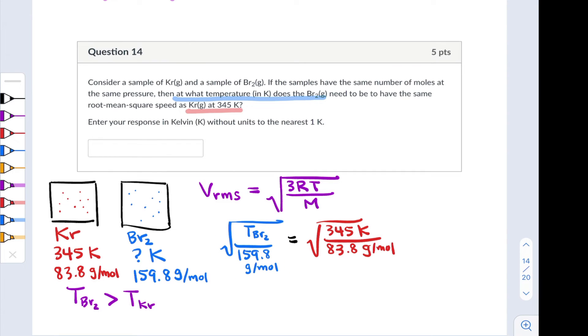So now I've got an equation with only one unknown remaining, that temperature of Br2. And I can solve for it by, for example, squaring both sides, cross-multiplying, and isolating TBr2. And this comes out to 658 Kelvin.